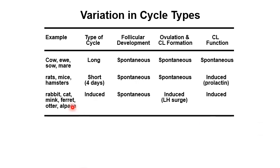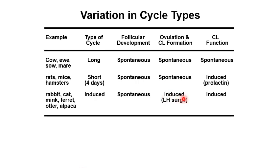For the rabbit, cat, mink, ferret, otter, and alpaca, ovulation is considered induced — mating is important for ovulation to occur as well as for formation of the CL. In the case of the cat, the penis has spines that are important for stimulation during copulation, and this also induces the LH surge. The CL is also induced in these species.